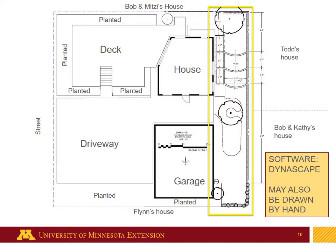This is the design that was produced using a software program called Dynascape — a commercial, professional product, though you can also draw these by hand. The area we're talking about is just this long narrow space to the west of the house. It's not a very big area, no wider than 15 feet from the back of the house to the property line, but tight spaces present their own challenges.